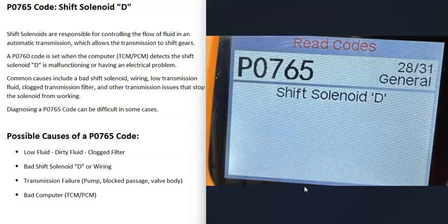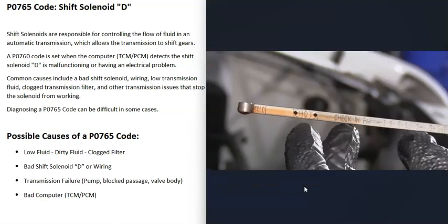A possible cause of a P0765 code is low fluid, dirty fluid, or a clogged transmission filter. If the fluid is low or really dirty, that's going to cause problems. If possible, it's a good idea to check the transmission fluid and make sure it's at the correct level. Many vehicles nowadays no longer have a dipstick, but if there is one, go ahead and check it.